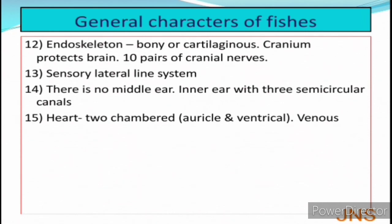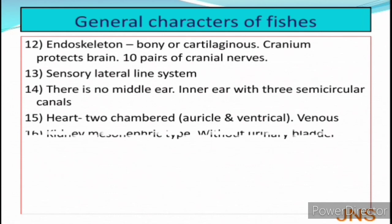The heart of the fish is two-chambered — one auricle and one ventricle. This heart is called a venous heart because only impure blood enters the heart. So the heart of the fish is particularly venous.